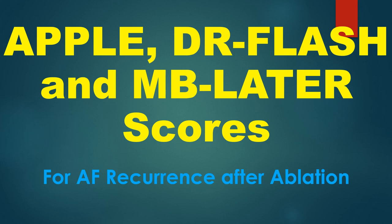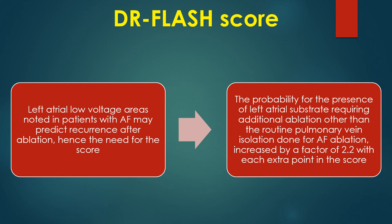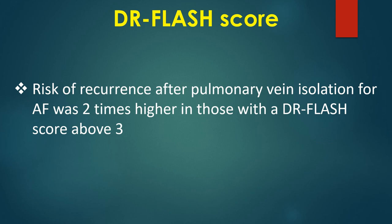Discussion on APPLE, DR-FLASH, and MB-LATER scores for assessment of recurrence of atrial fibrillation after catheter ablation. DR-FLASH score is based on diabetes mellitus, renal dysfunction, persistent form of AF, left atrial diameter above 45 mm, age above 65 years, female sex, and hypertension. It was developed as a clinical score for left atrial arrhythmogenic substrate based on voltage analysis. Left atrial low voltage areas noted in patients with AF may predict recurrence after ablation. The probability for the presence of left atrial substrate requiring additional ablation beyond routine pulmonary vein isolation increased by a factor of 2.2 with each extra point. Risk of recurrence after pulmonary vein isolation was 2 times higher in those with DR-FLASH score above 3.